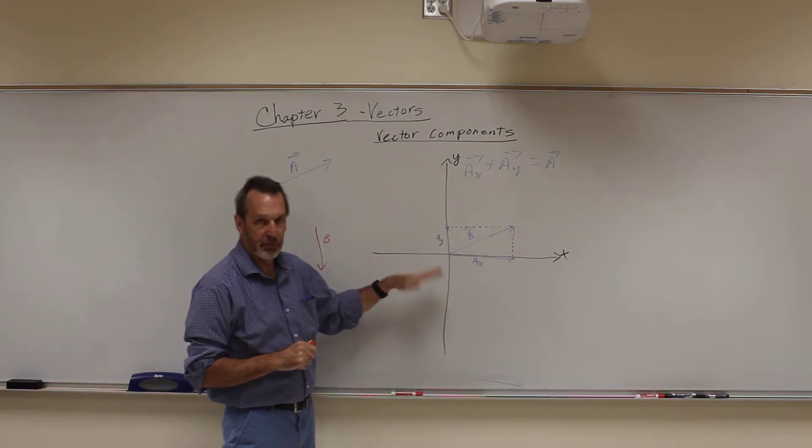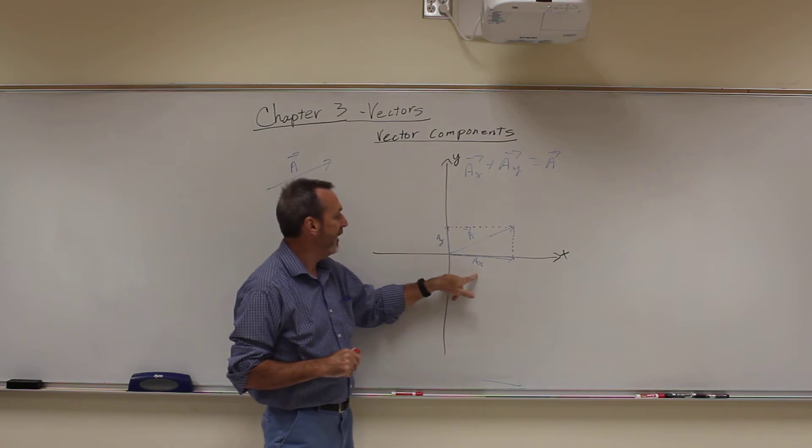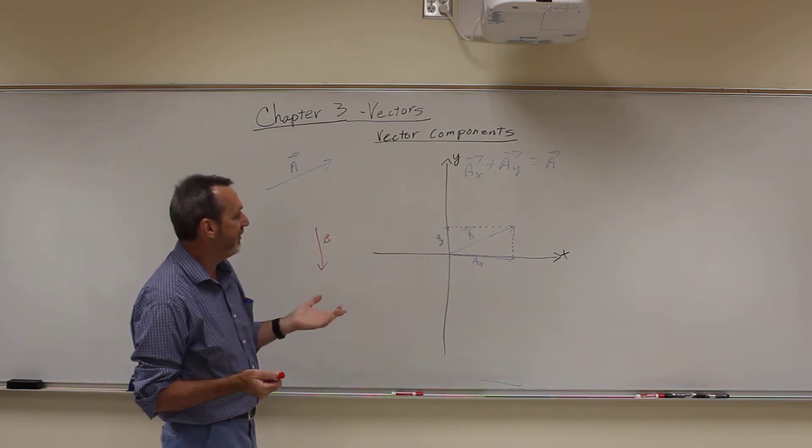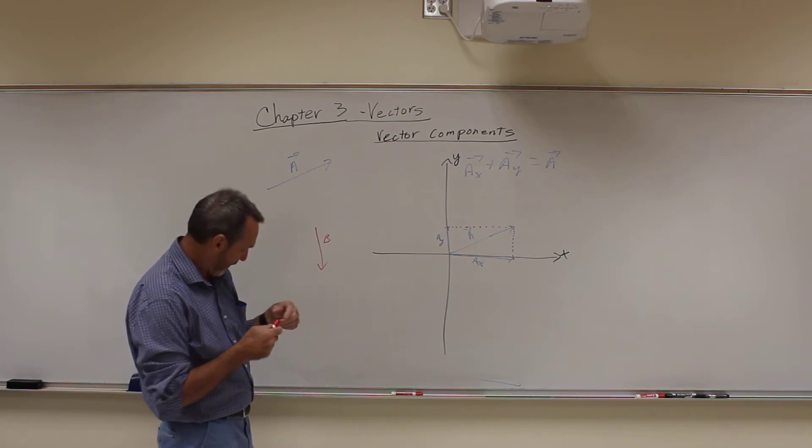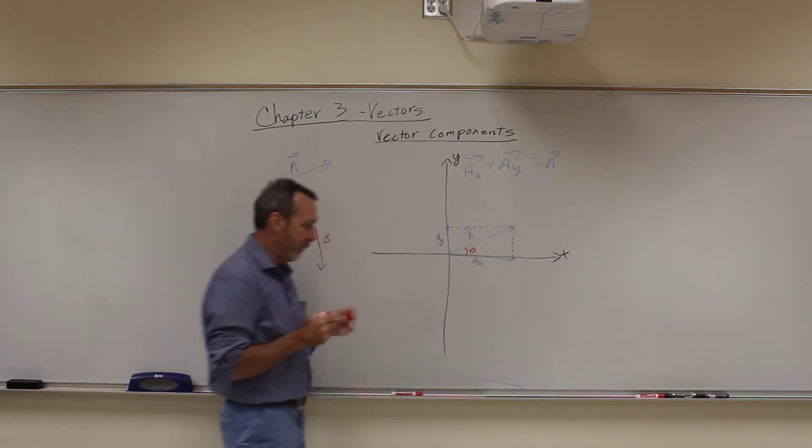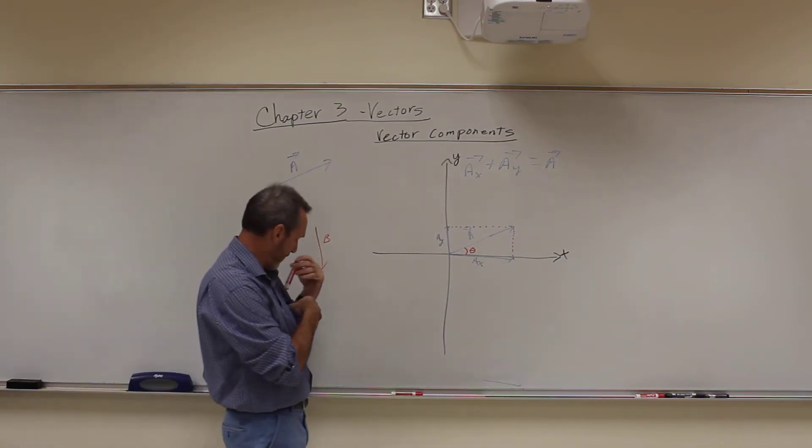And so you can take any vector and split it into components that are X components and Y components. And you can have a Z component if we're doing three dimensions. We're just going to do two dimensions right now. So we have X and Y components of each of them. And how you get that position is we need to know an angle away from some location, some reference point. That angle can be anywhere.